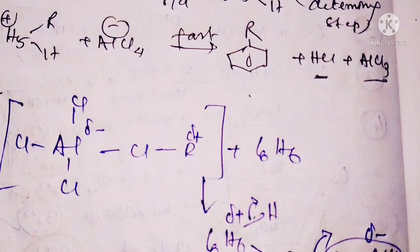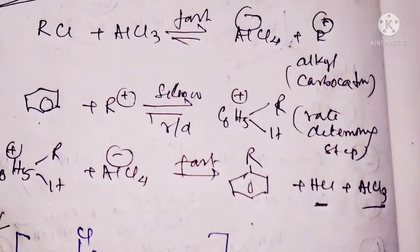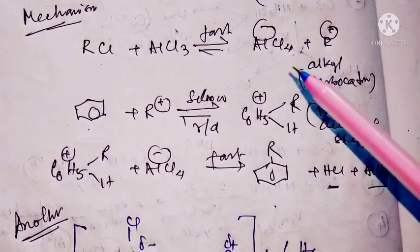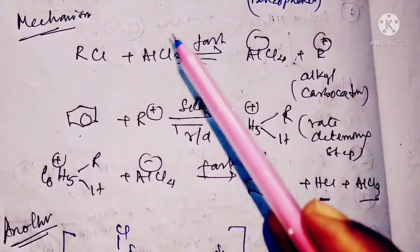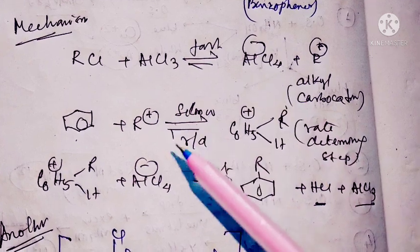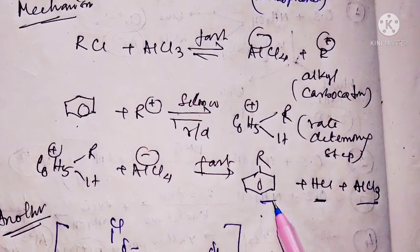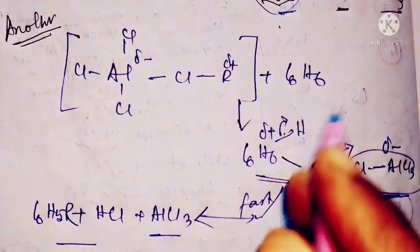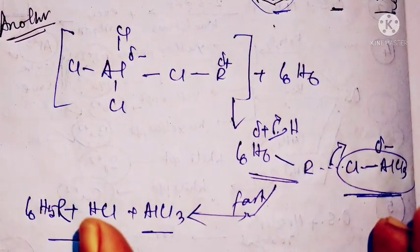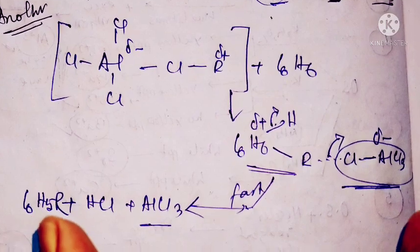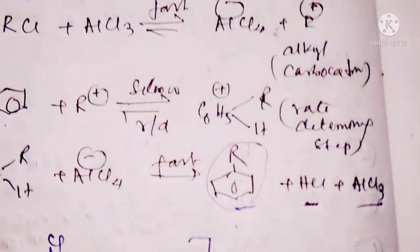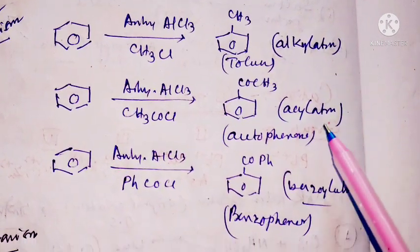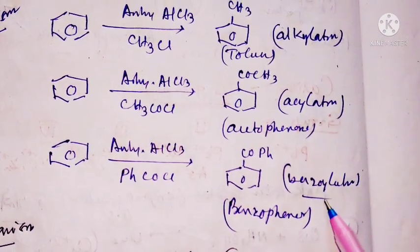I hope you understand the Friedel-Crafts reaction mechanism. I have shown you two steps: the first mechanism involves carbocation formation followed by alkyl group insertion into the benzene ring. The second mechanism does not consider the formation of a free alkyl carbonium ion. These are the main reactions of the Friedel-Crafts reaction: alkylation, acylation, and benzoylation.